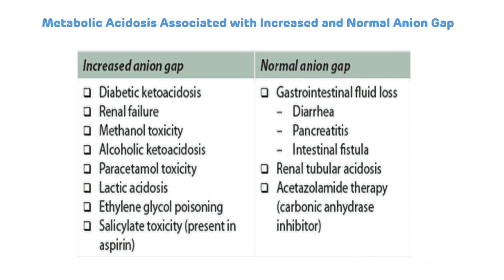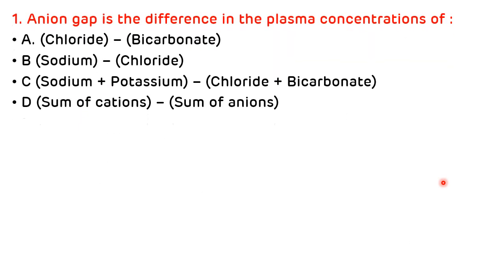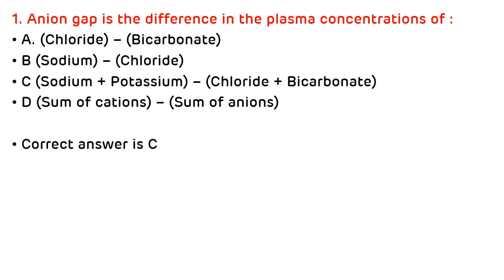Now we will see multiple choice questions related to anion gap. Question 1: Anion gap is the difference in the plasma concentration of — A) chloride minus bicarbonate, B) sodium minus chloride, C) sodium plus potassium minus chloride plus bicarbonate, D) sum of cations minus sum of anions. The correct answer is C — sodium plus potassium minus chloride plus bicarbonate — representing unmeasured cations minus unmeasured anions.